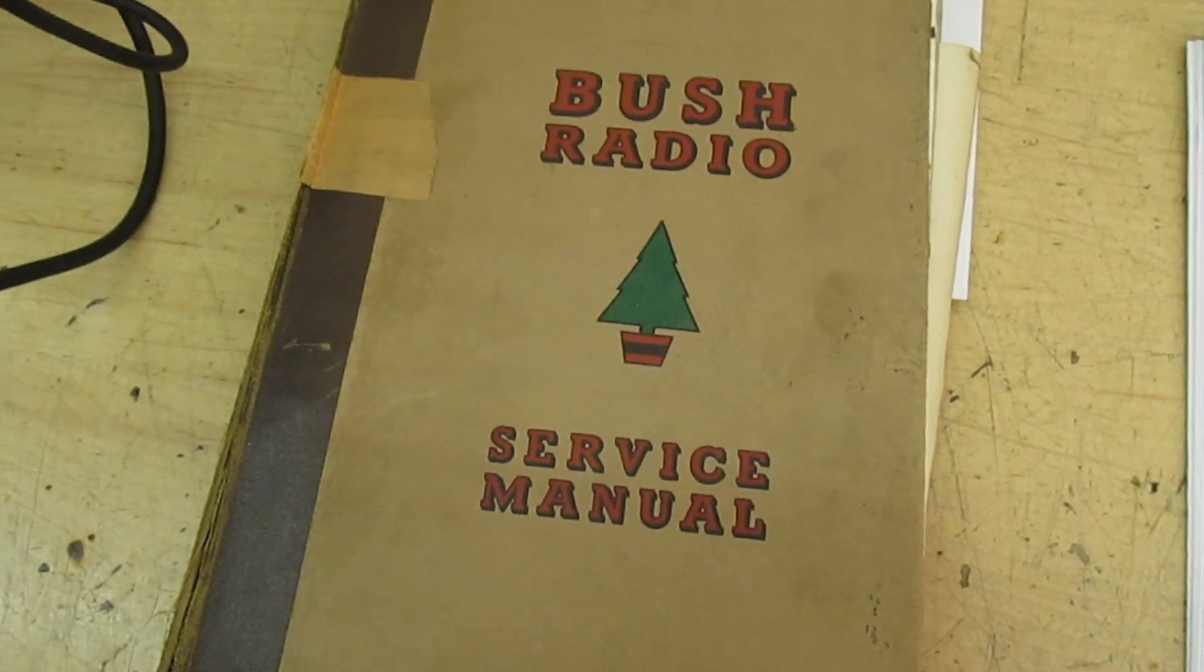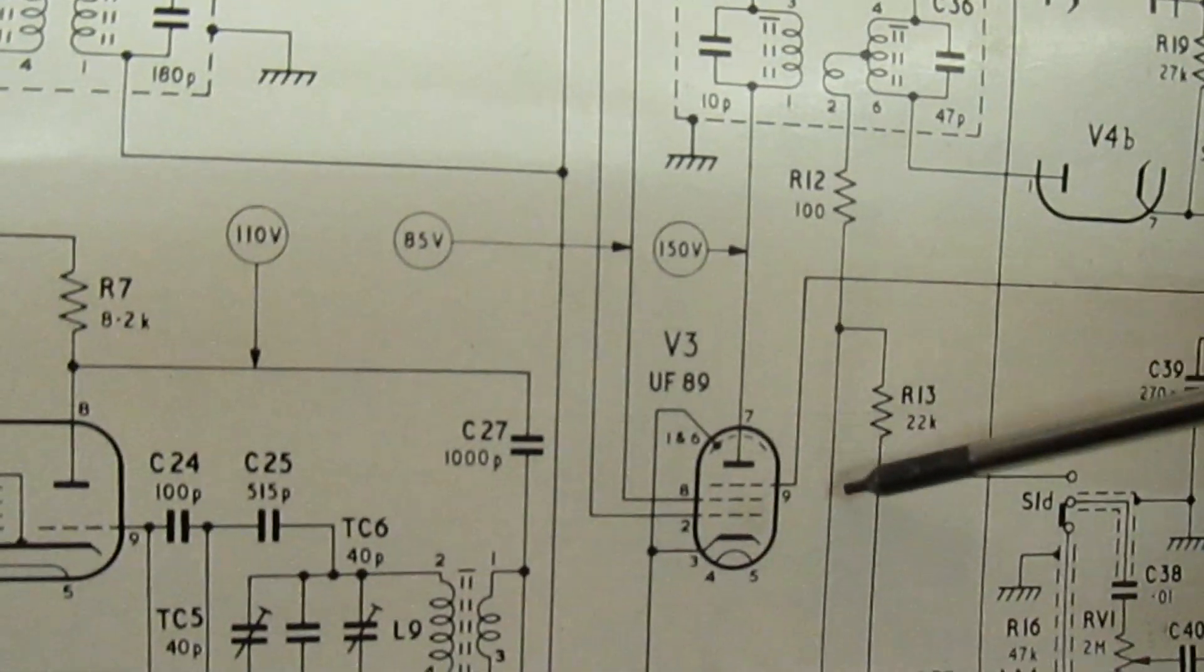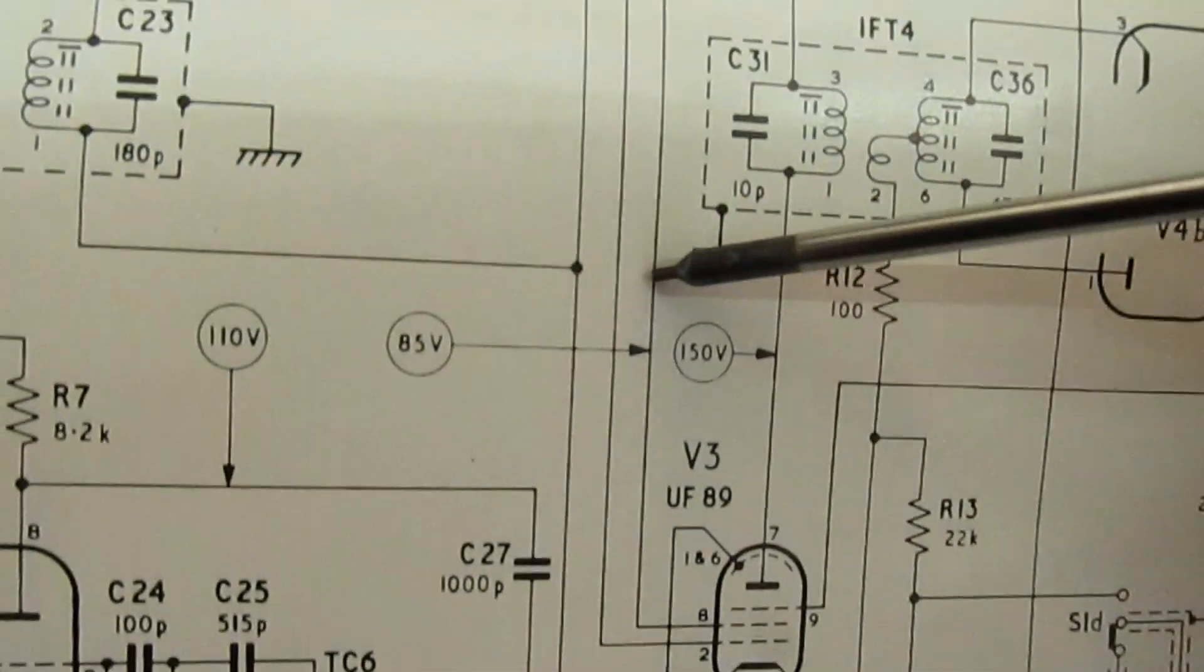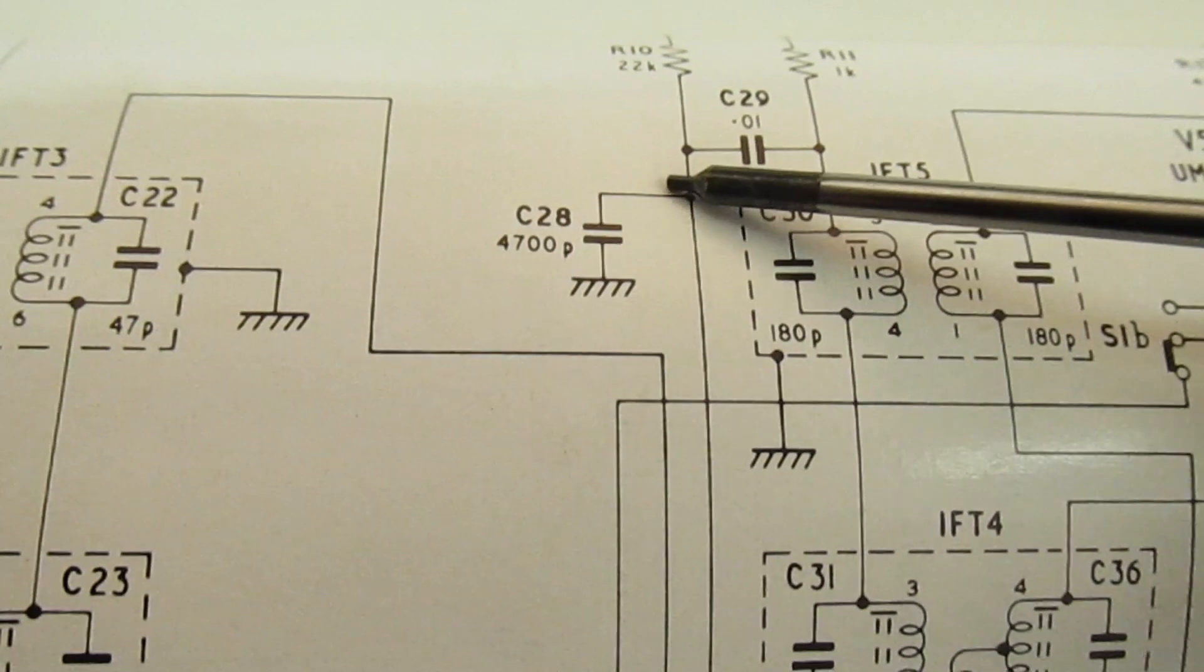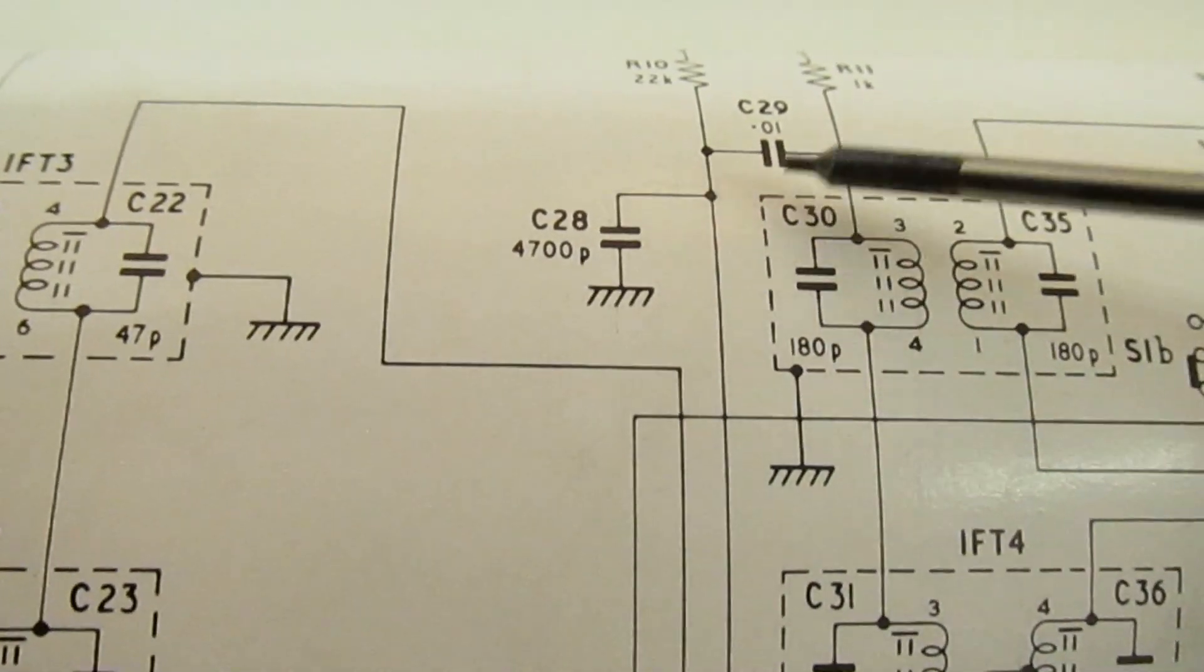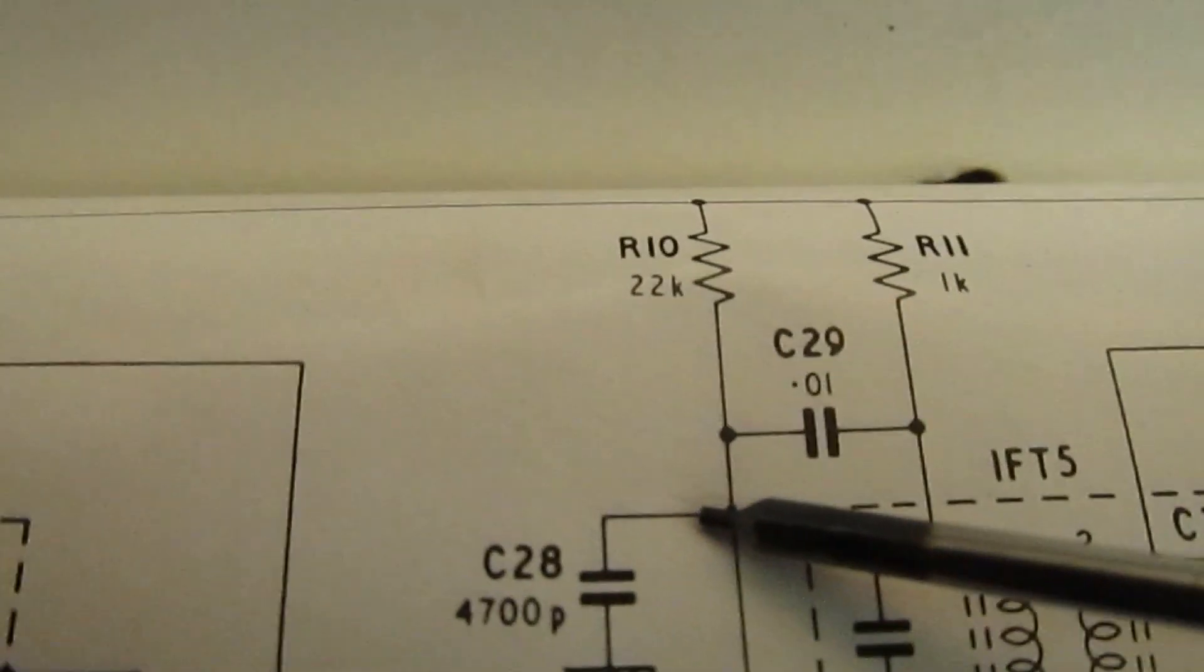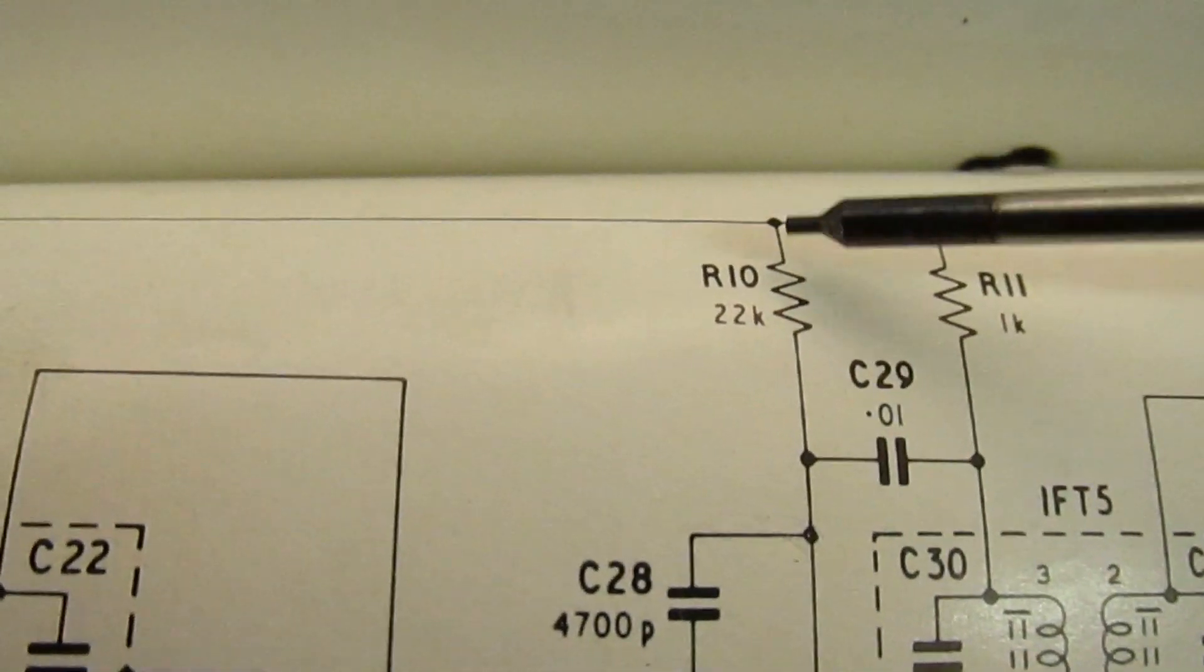If we take a look at this valve here, pin 8 is the screen grid, and that goes up there and then goes to the decoupling capacitor to ground and the screen grid dropper resistor or screen grid feed resistor, some people tend to call it. You'll see that actually goes straight up to the HT rail.